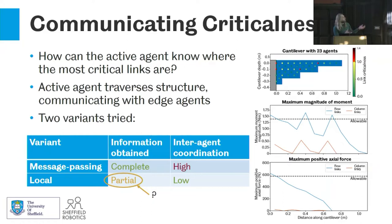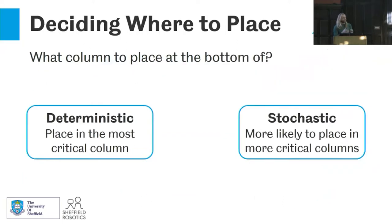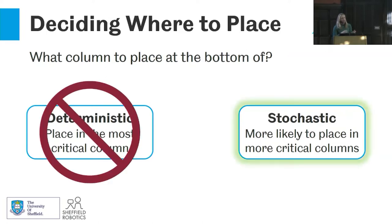Once we have a picture of column criticalness, how do we decide where to place? We're reinforcing the bottom of columns, so agents choose which column to move to. There's a deterministic method — place in the most critical column — but this leads to deadlocks. Instead, we use a stochastic method where agents are more likely to place in critical columns but have a probability of placing anywhere, so they can explore the solution space better and get better performance.